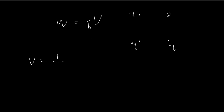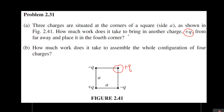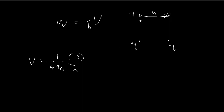We consider them case by case. The contribution from the first negative q charge is equal to one over four pi epsilon, times the charge negative q, divided by the distance A. We're given that this distance is A. Then we do the exact same thing for the second negative q charge, giving another negative q divided by A term.